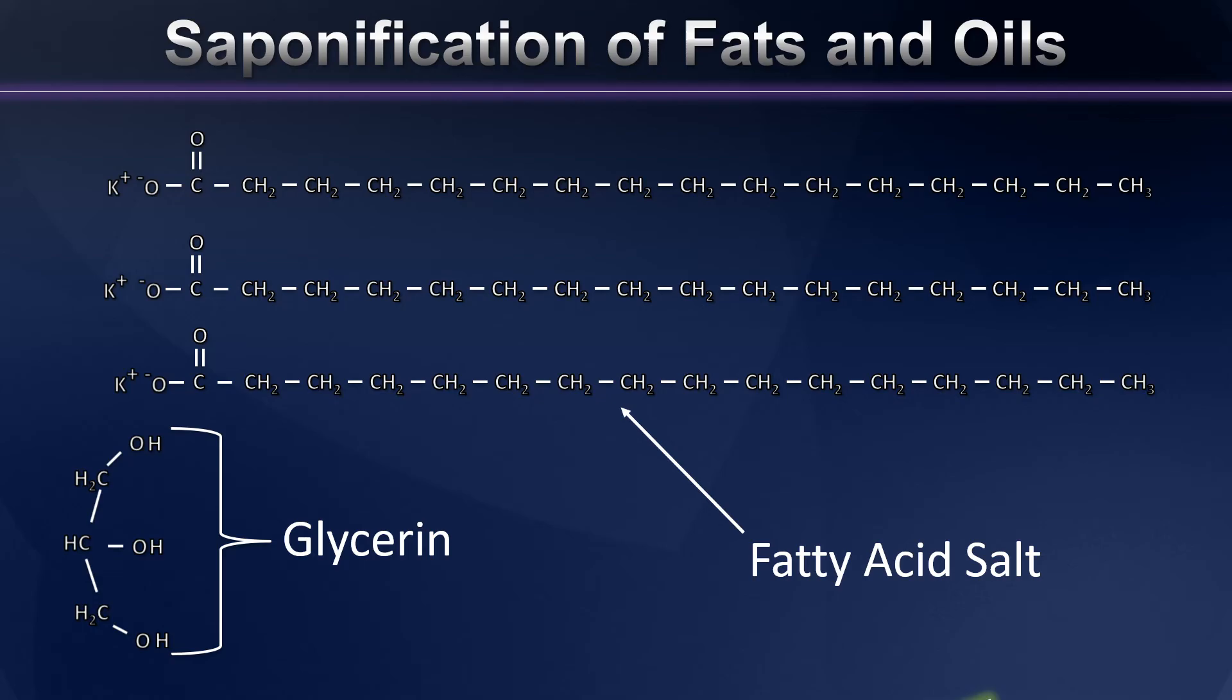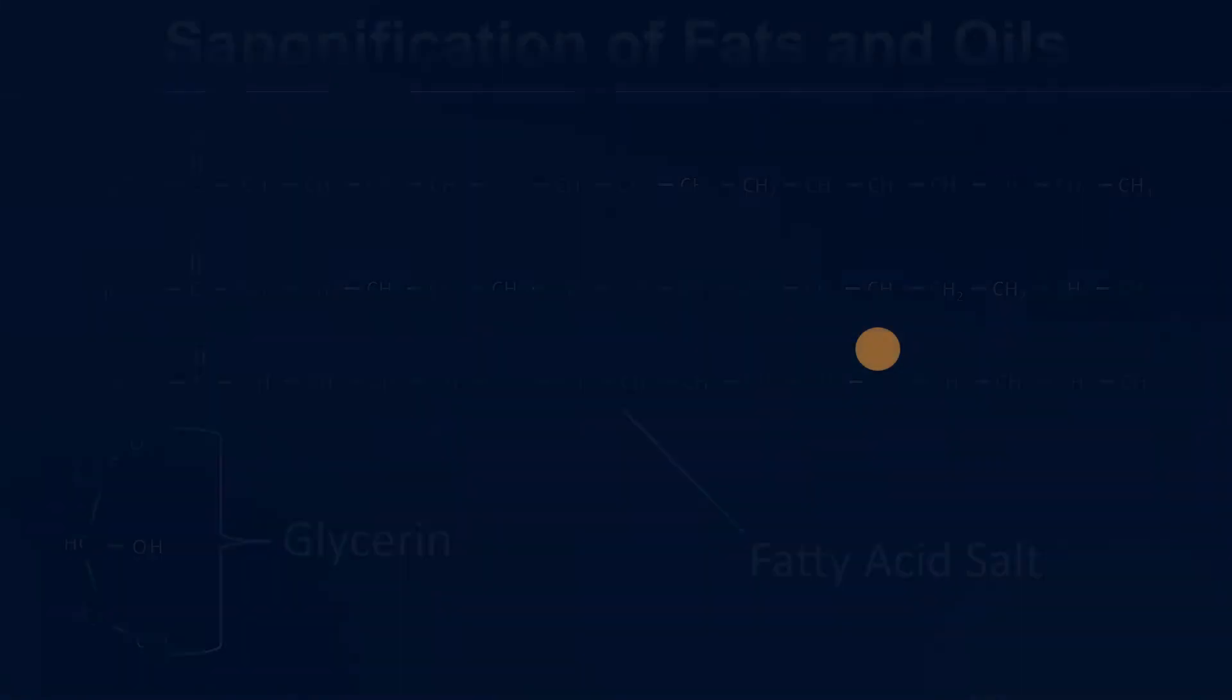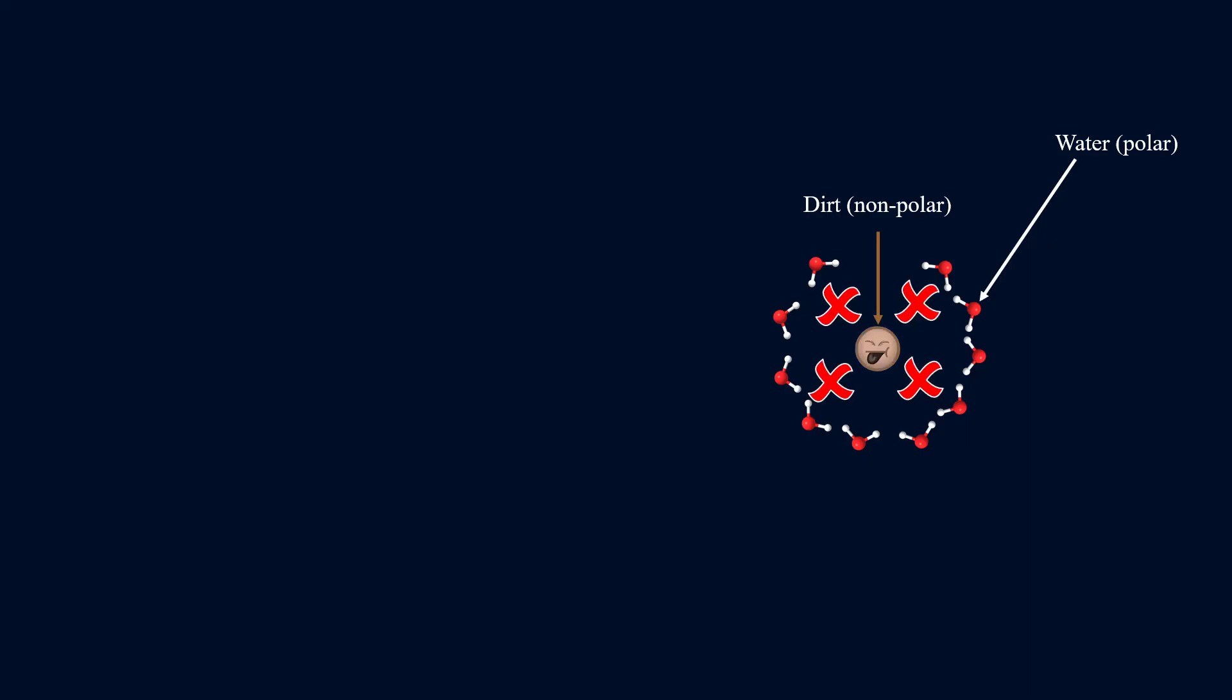So let's take a look now at how these fatty acid salts help to dissolve dirt into water. Now dirt is a relatively low polarity substance. It's an odd mixture of lots of things, but it's generally pretty low polarity stuff. So if we were to try to rinse this spot of dirt away simply using water, we would find that the high polarity water and the low polarity dirt don't get along well.